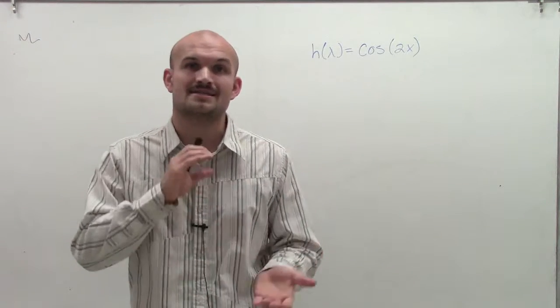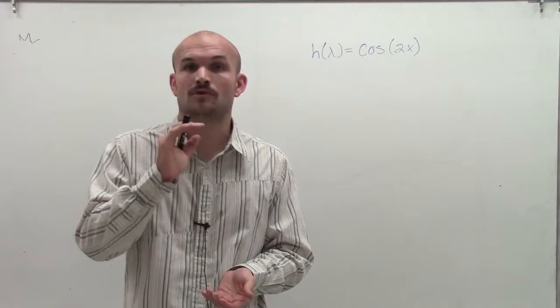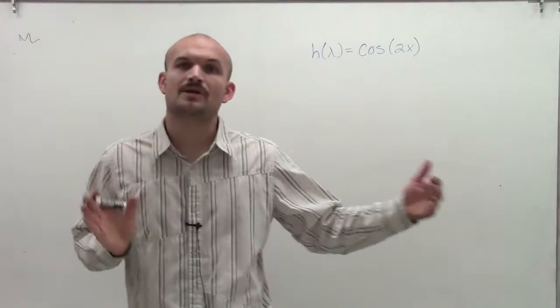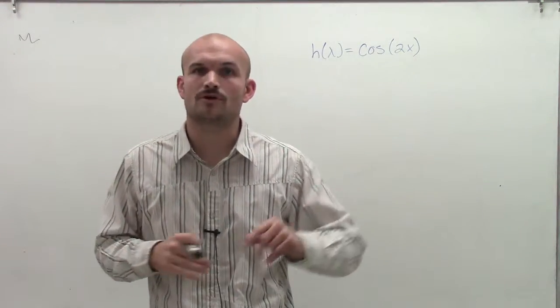One thing we notice is it has an amplitude of 1, which is the half distance of your y value, your y max and your y minimum value. It has a period of 2π, and there are four critical points.